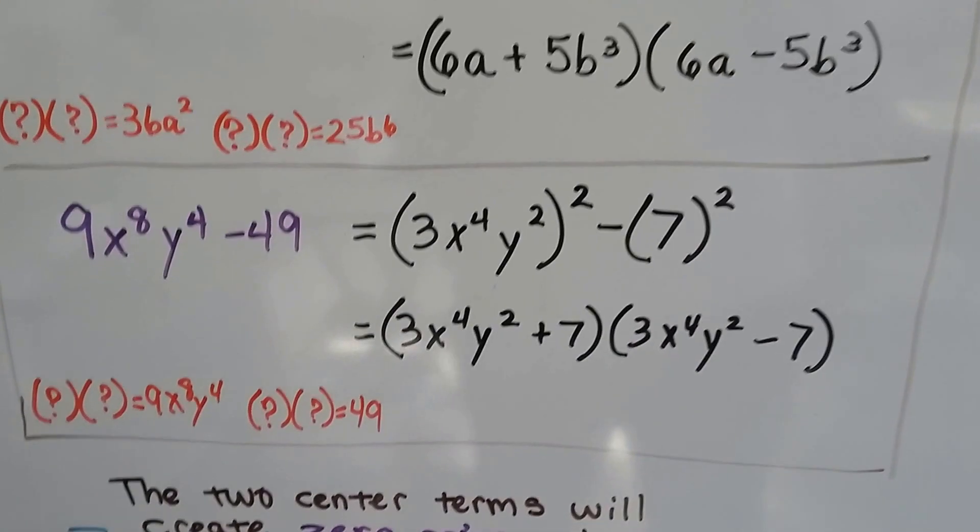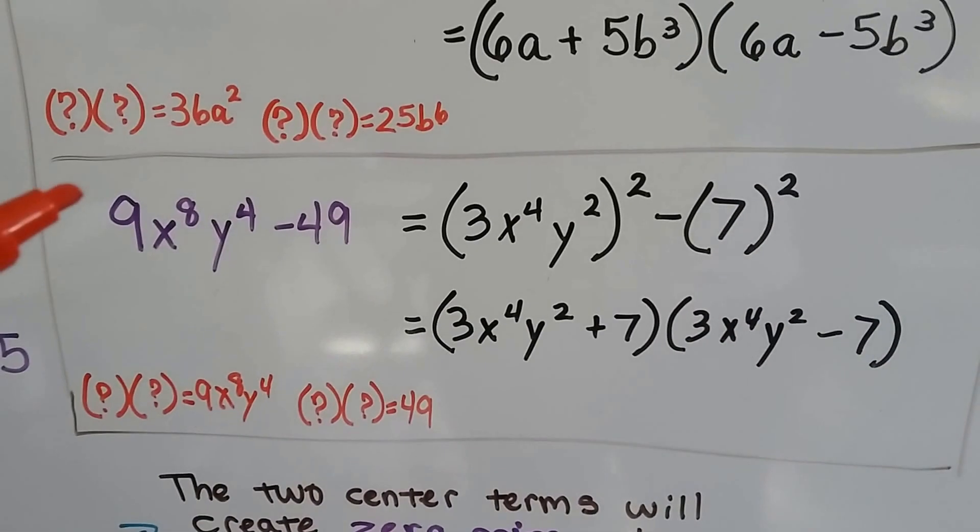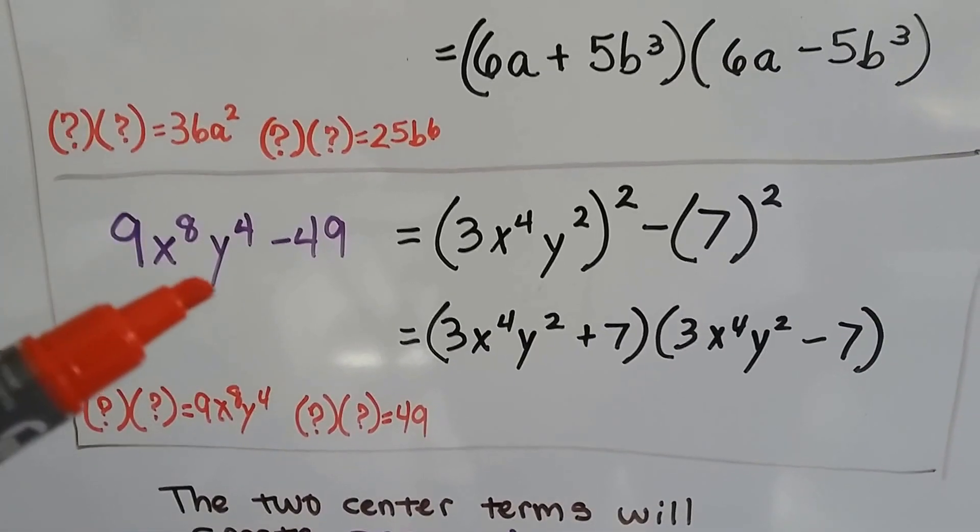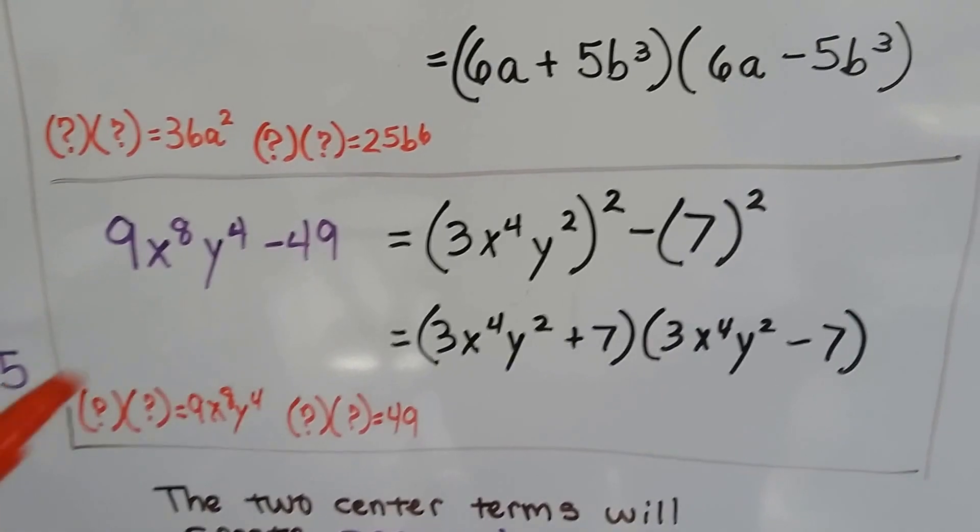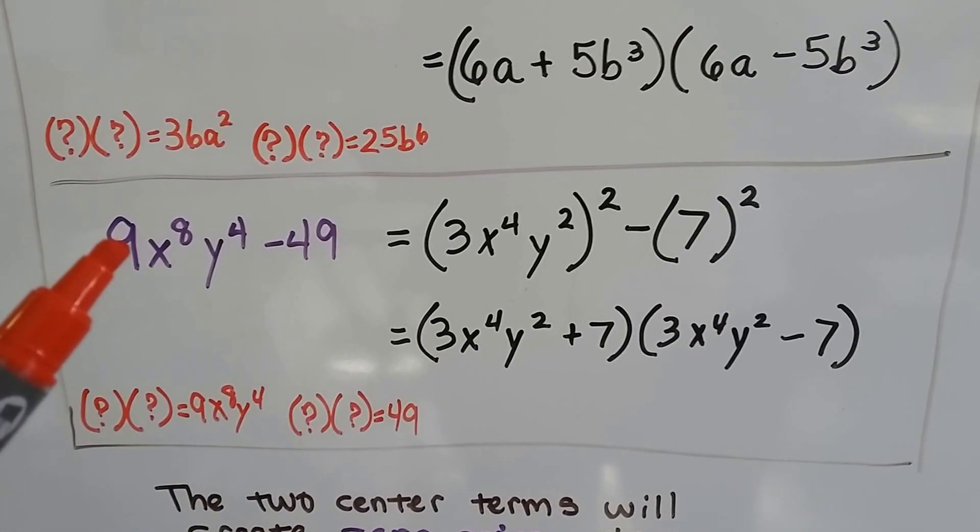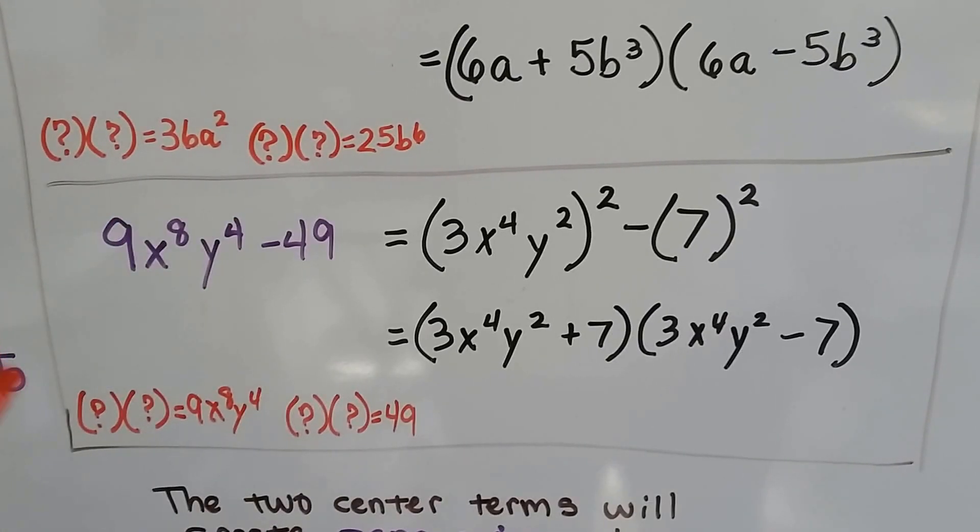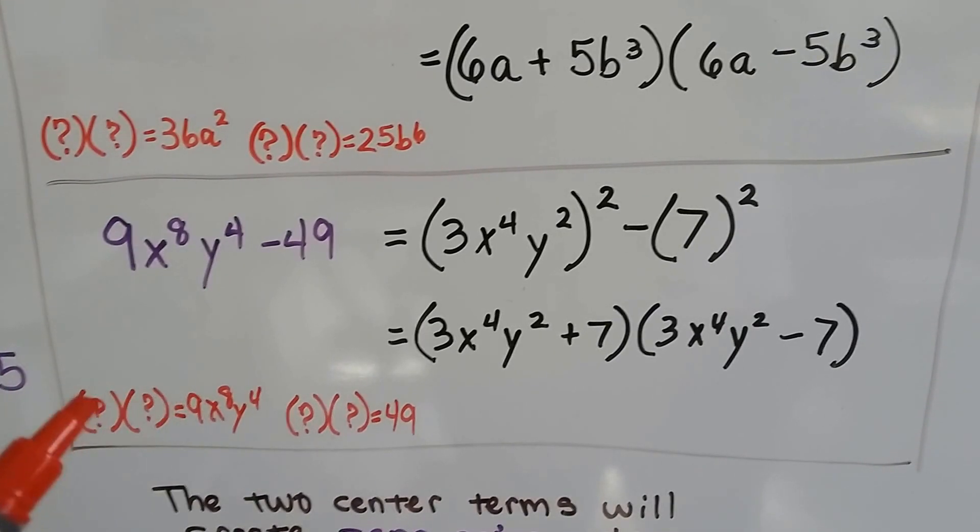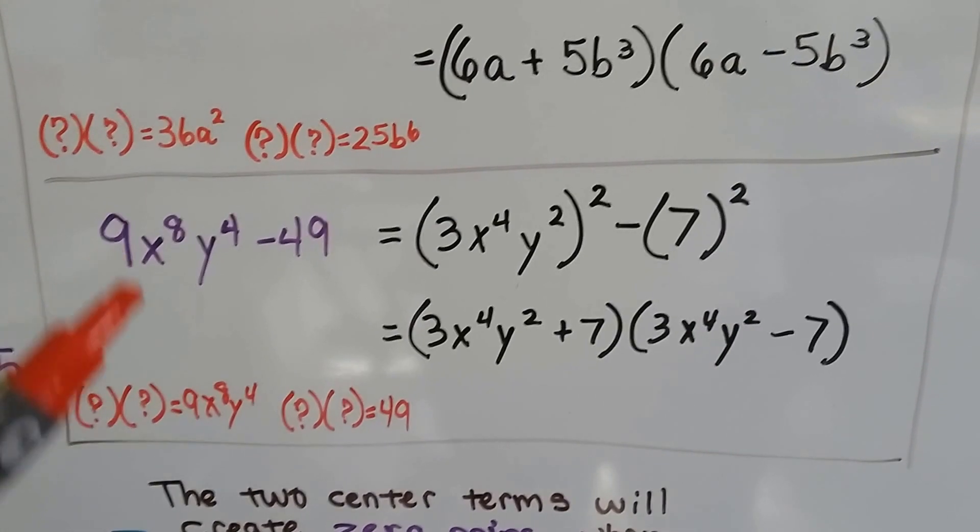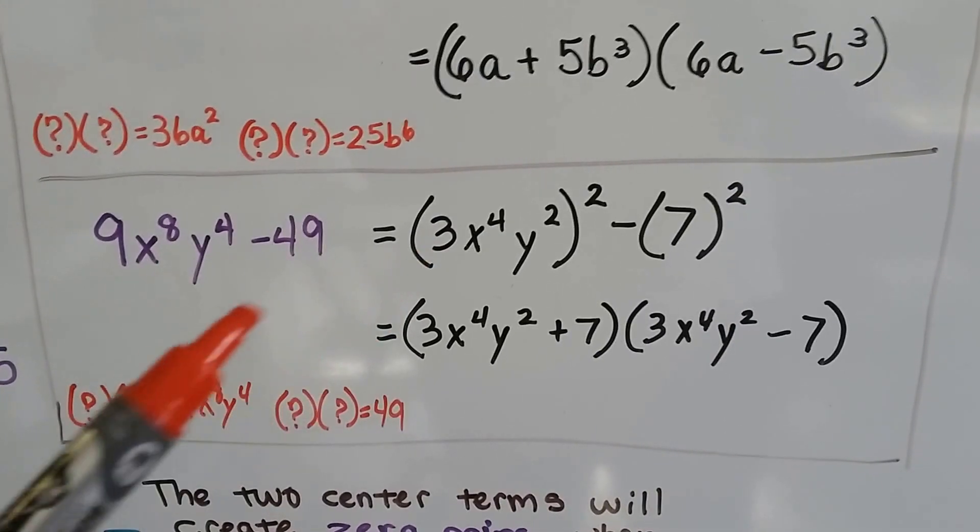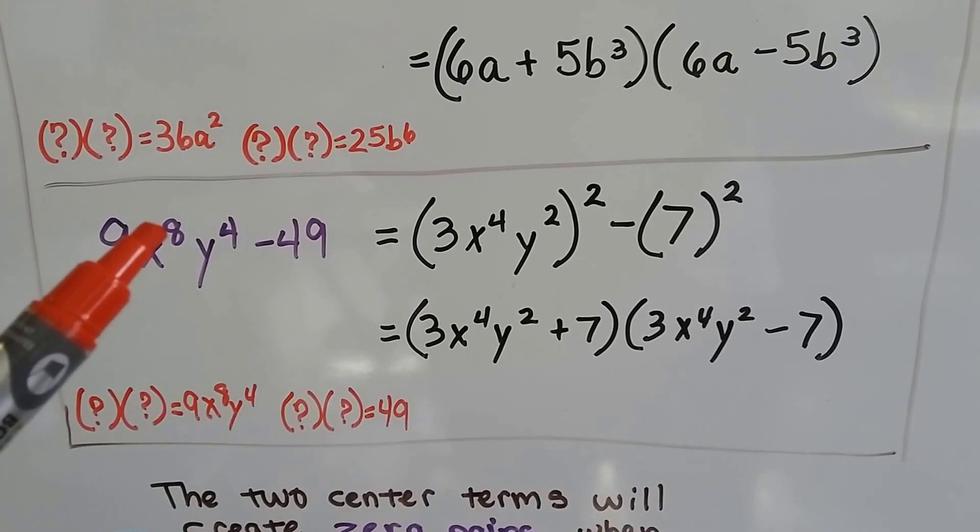Let's do one that's even harder. We have 9x^8y^4 minus 49. What times what would be 9x^8y^4? Knowing that we add the exponents when we multiply them, the 9 would be 3. And what plus what would equal 8? That would be squared. It would be 4. We would just cut it in half.